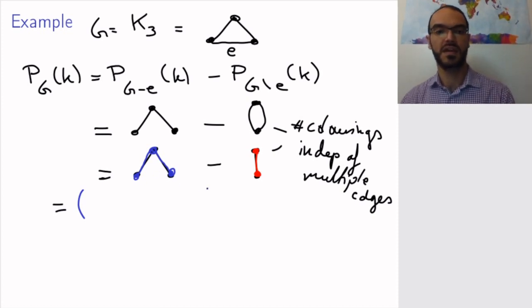So this is the number of colorings in k colors of this graph. And again, now I take a new edge, F. I remove F, so I get this graph.